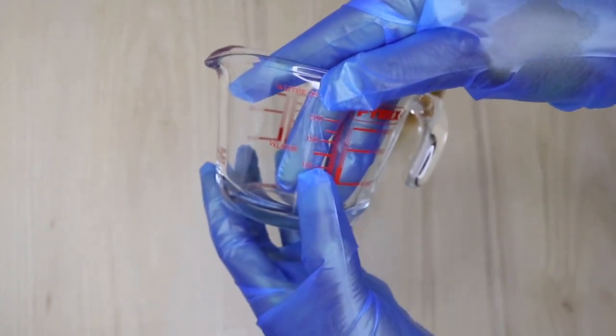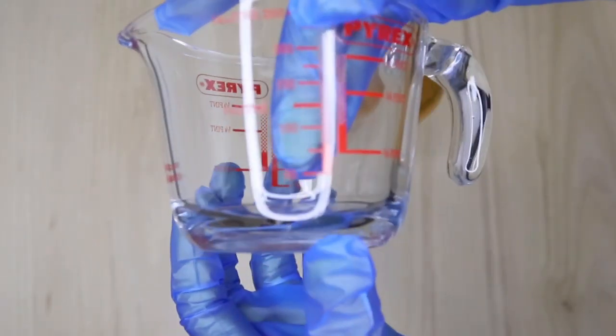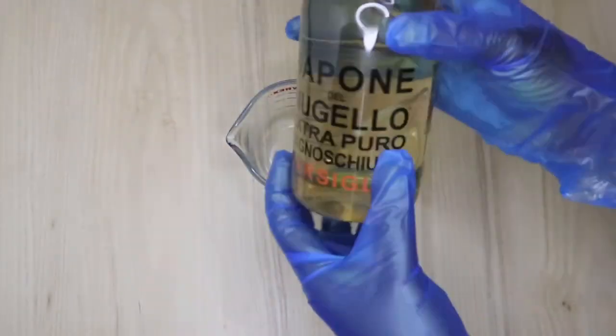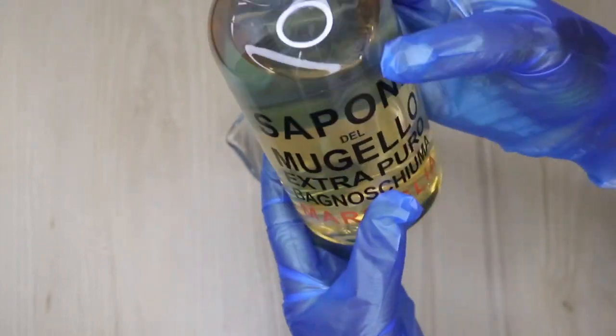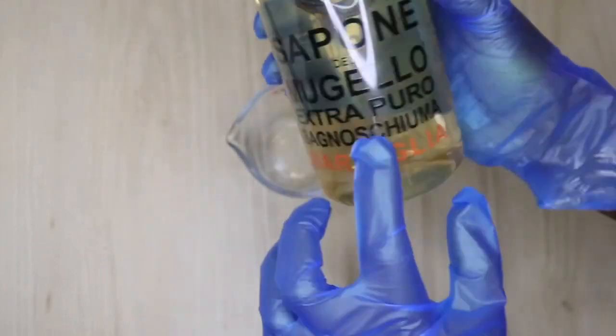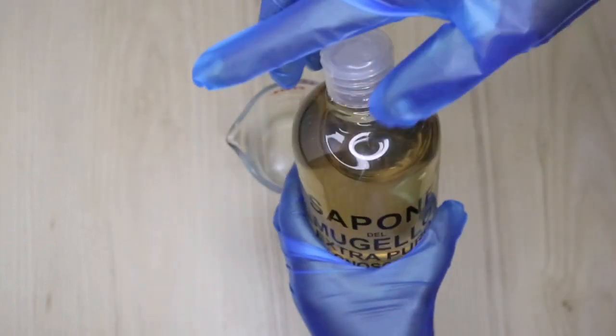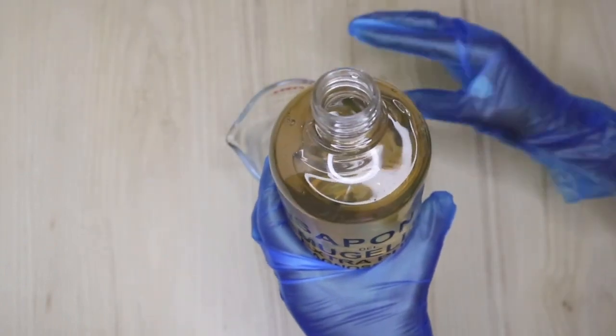First I'm going to show you the beaker I'll be using as my measurement cup because it has measurement numbers. I will be measuring 150 milliliters of my castile soap.